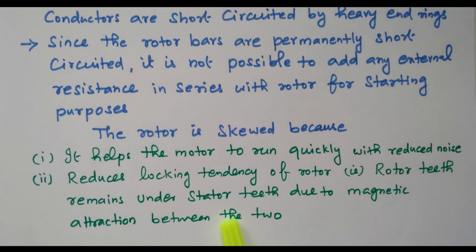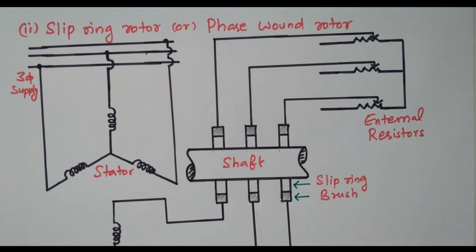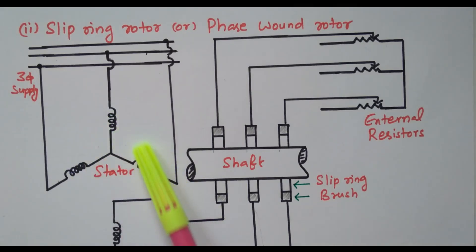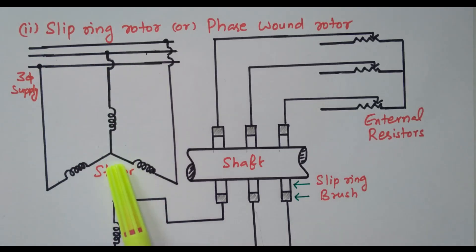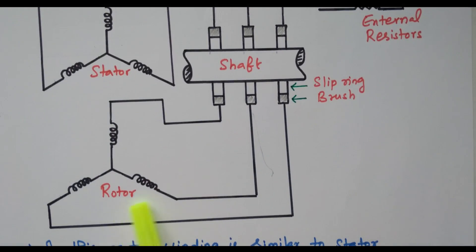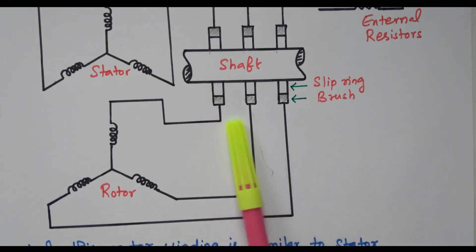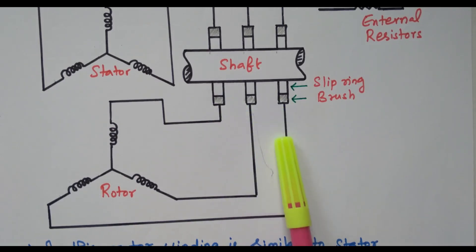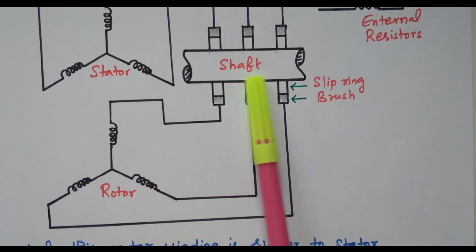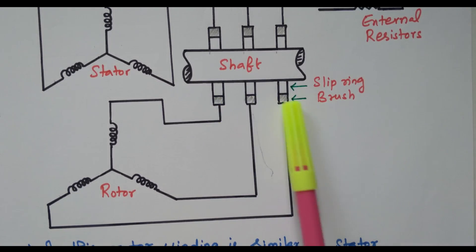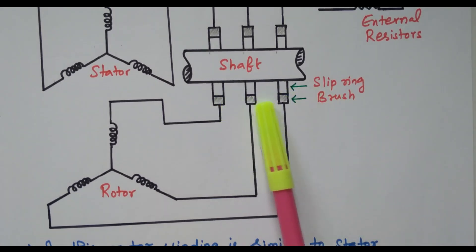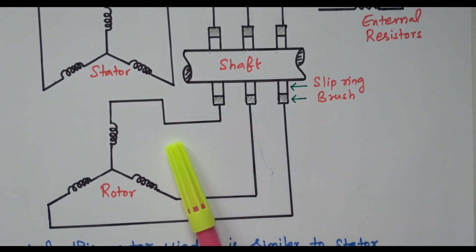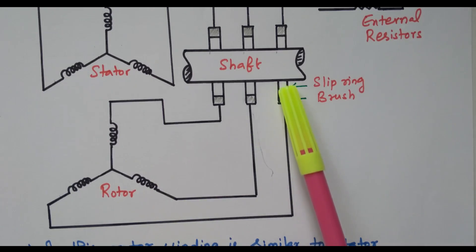Now we will go to the second type: the slip ring rotor or phase wound rotor. In this type, separate windings are available for the rotor. The stator receives three-phase supply. The rotor winding is star connected and connected to slip rings. Through the slip rings and brushes, supply is given to the rotor windings. The shaft is also visible in the diagram — the shaded portion represents the brushes and the other portion is the slip ring. Unlike the squirrel cage rotor, here the windings are placed instead of copper or aluminum bars, and supply to the winding is given through the slip ring and brushes.